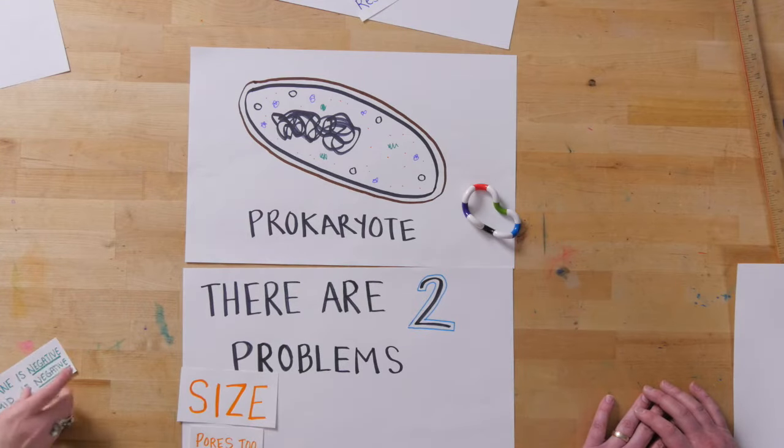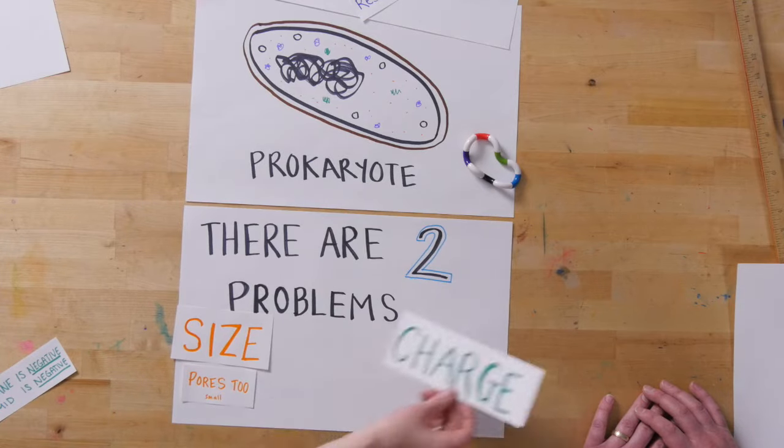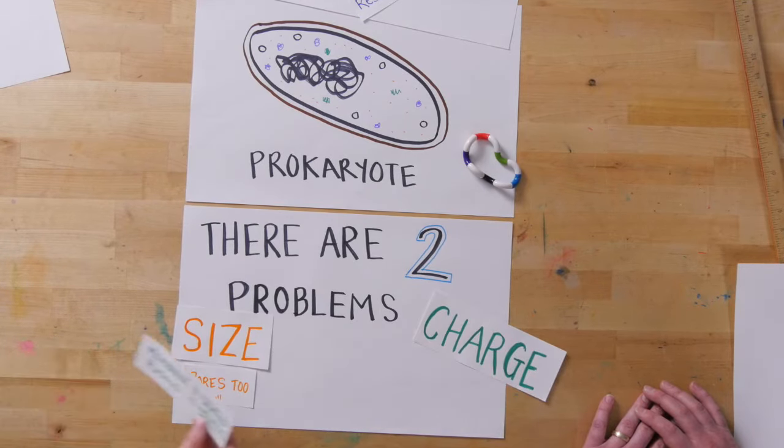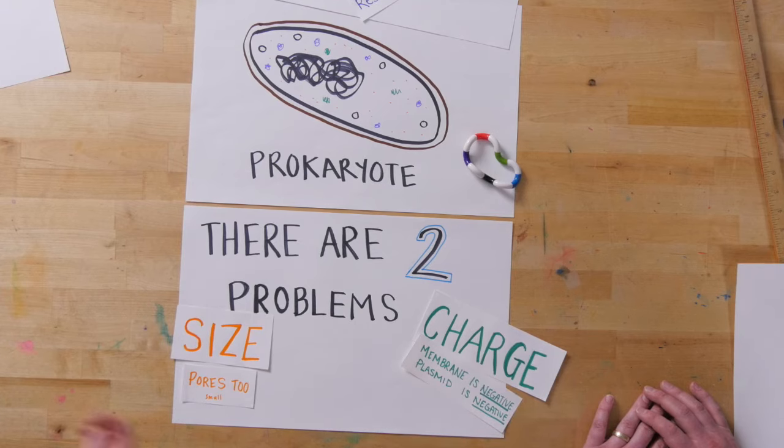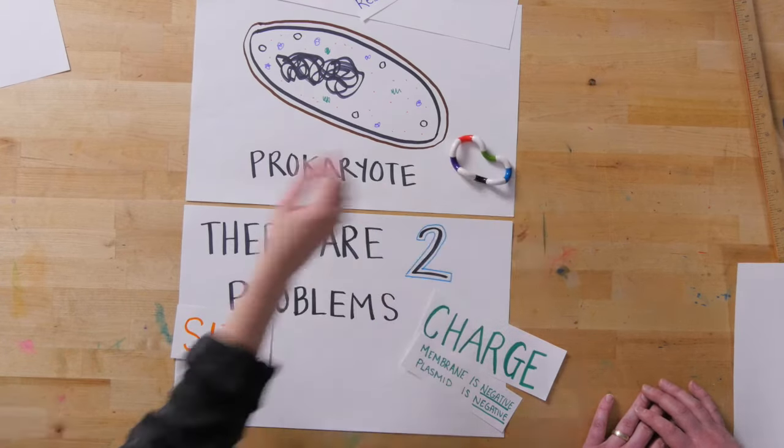The other is charge. The membrane is negative, and the plasmid is negative. So then they actually will repel each other, and the plasmid won't want to go inside of the cell.